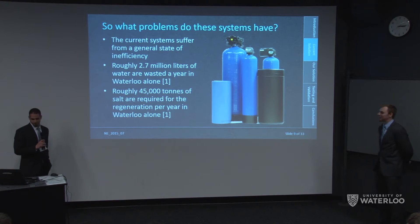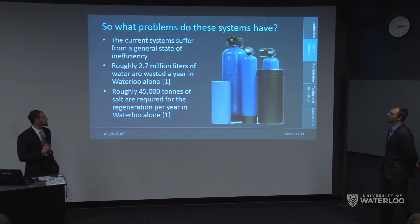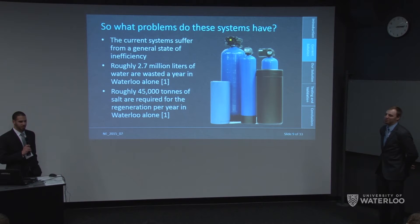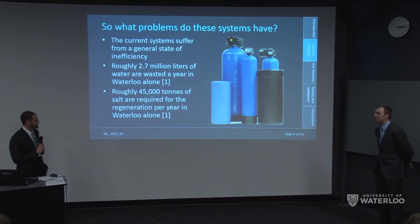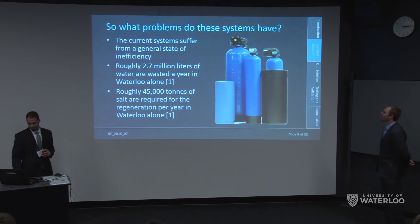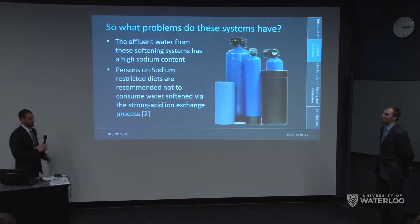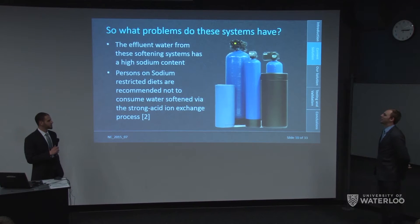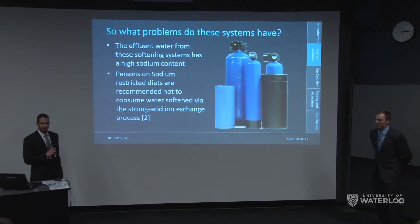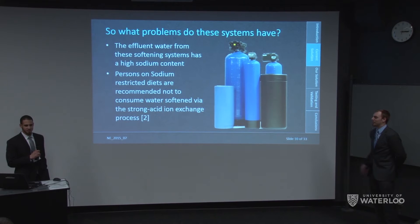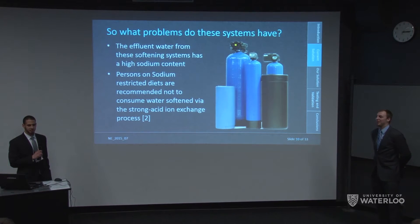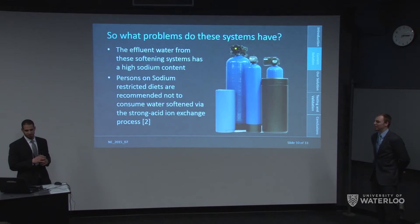Fortunately, these are not the only issues. Roughly 2.7 million liters of water and approximately 45,000 tons of salt are used in the regeneration process of water softeners in Waterloo per year alone. Because of the amount of salt flushed through, the effluent water has a high sodium concentration, which is not good for people with hypertension or cardiovascular irregularities. Doctors have even advised people not to drink softened water due to its high sodium content.